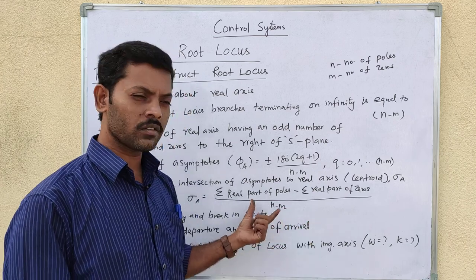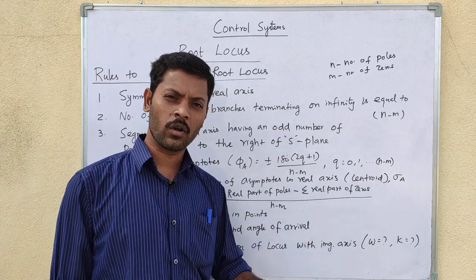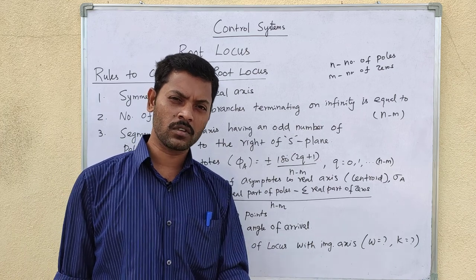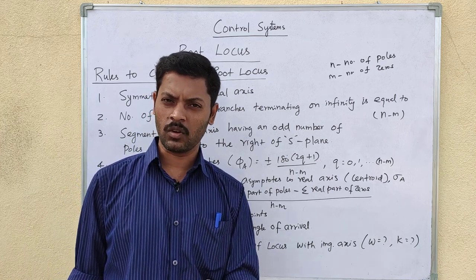As mentioned, the centroid is not necessarily on the root locus itself, but the asymptotes are part of the root locus.